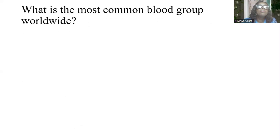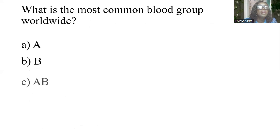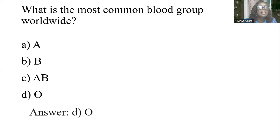What is the most common blood group worldwide? Options: A, B, AB, O. The answer is D: O blood group is the most common blood group worldwide.